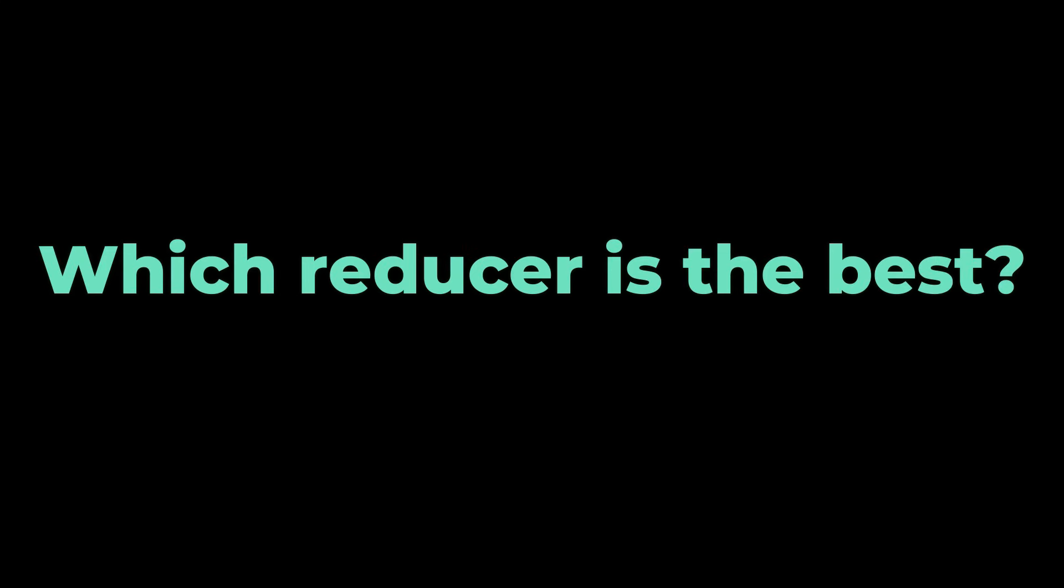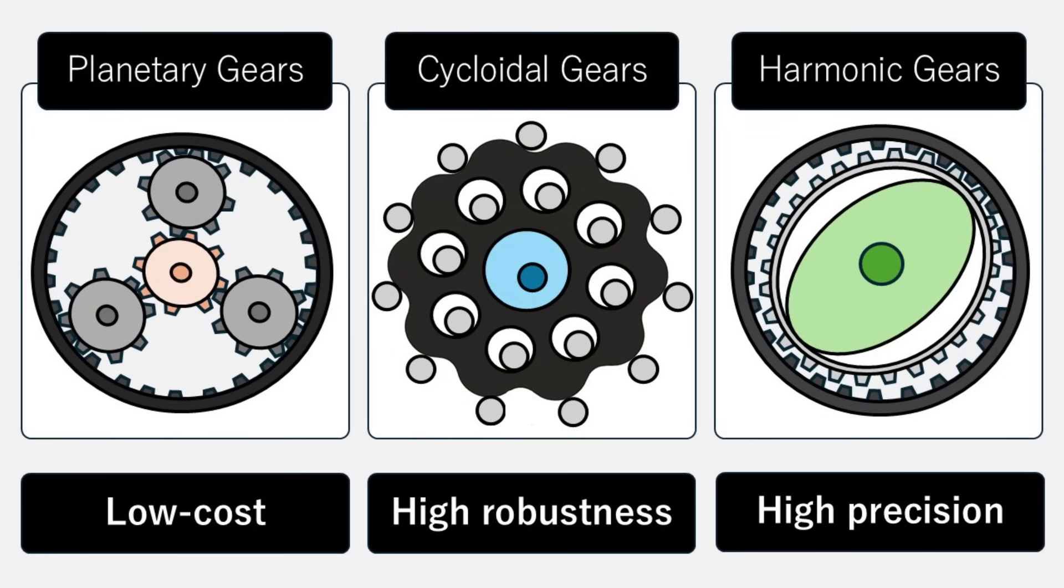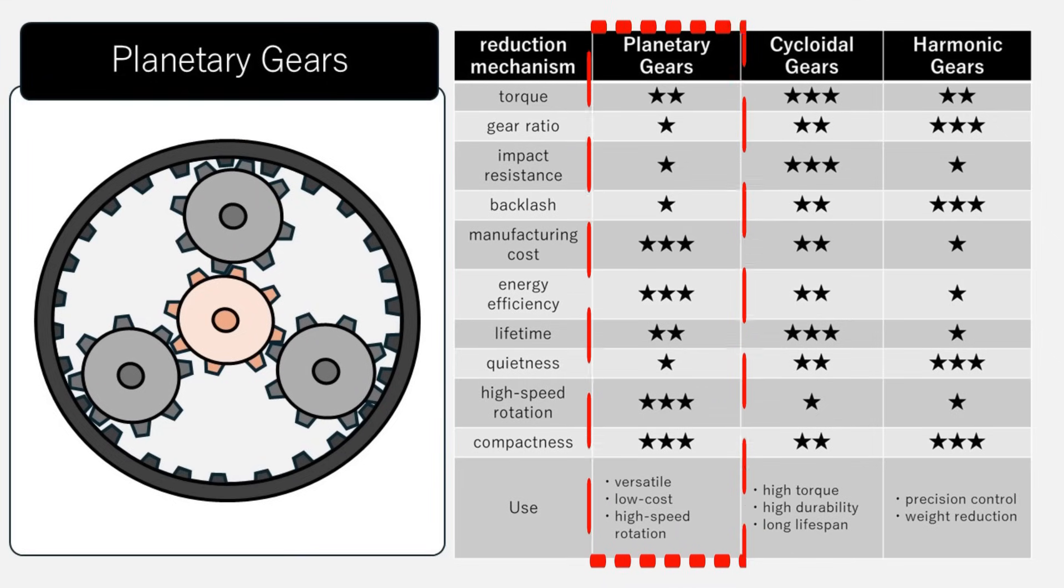Which reducer should you choose? There are typically three well-known mechanisms. Planetary gears: their biggest advantage is that they don't require highly specialized parts, making them inexpensive to manufacture. As a result, planetary gears see widespread use in many fields.